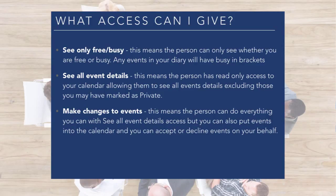The third level is 'Make changes to events'. This means the person can do everything included in 'See all event details' access, but they can also add events into the calendar and accept and decline any events on your behalf.